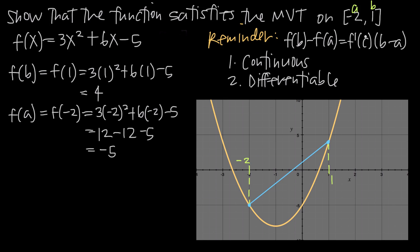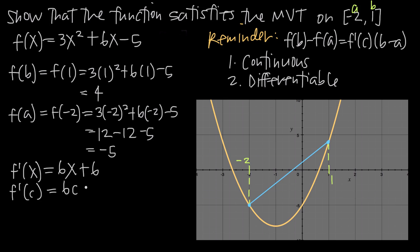Now we need f'(c). We don't know c yet, but we can find the derivative of f(x). The derivative of 3x² is 6x, the derivative of 6x is 6, and the derivative of -5 is 0. So f'(x) = 6x + 6. Since f'(c) means plugging c in for x, we get f'(c) = 6c + 6.